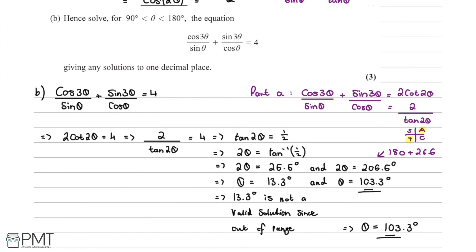We conclude that θ = 103.3° to one decimal place. For the marks: the first was for writing 2/tan(2θ) = 4 using the previous result; the second for reaching 2θ = arctan(½); the third and final mark for concluding correctly with 103.3°, noting that 13.3° is out of range.